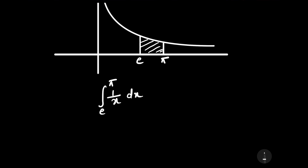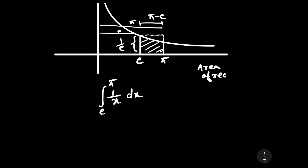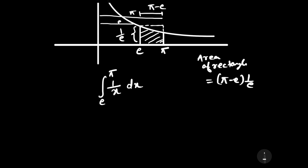If we calculate the area of the shaded region, we can do so by integration. The area of the shaded region equals the integral of 1/x dx from e to pi. But this area will be smaller than the area of the corresponding rectangle. The rectangle has height 1/e and width pi minus e, so its area equals (pi − e) × (1/e).